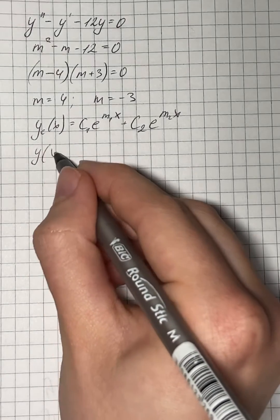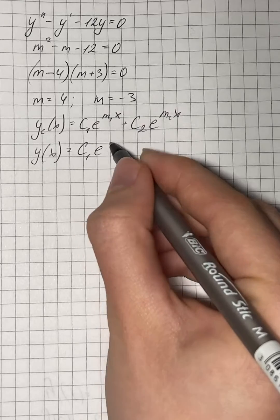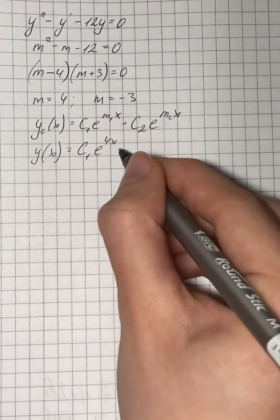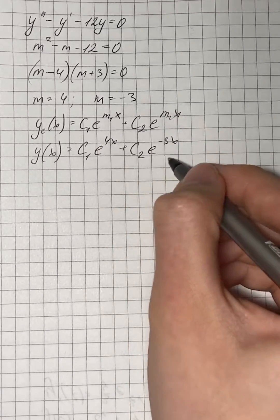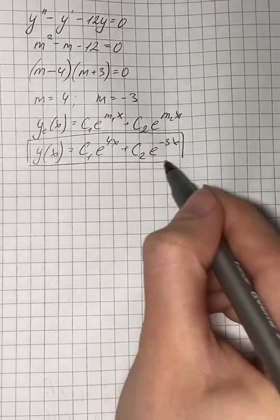We get c₁e^(4x) + c₂e^(-3x). And that's going to be our answer.